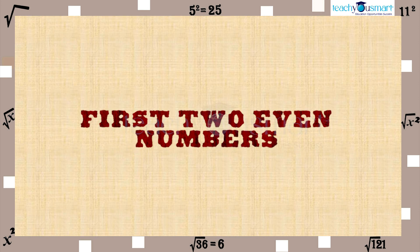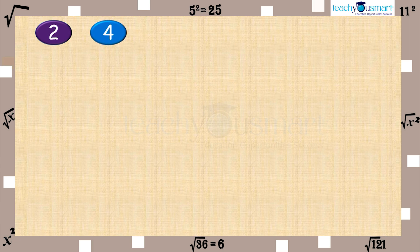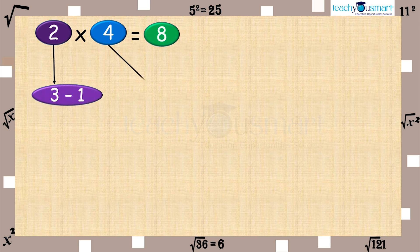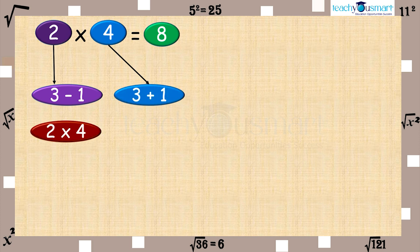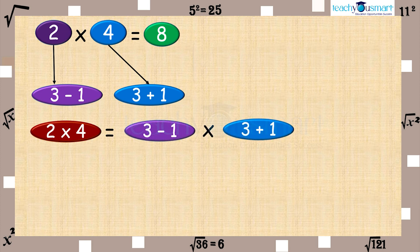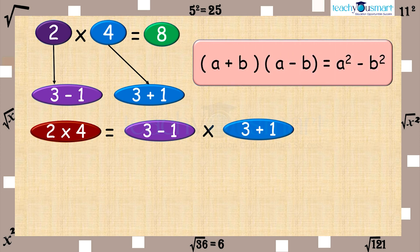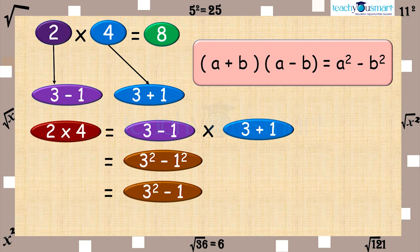Then consider the first two even numbers, that is, 2 and 4. We know 2 multiplied by 4 equals 8. We can rearrange 2 as (3 minus 1), and 4 as (3 plus 1). So, 2 multiplied by 4 equals (3 minus 1) multiplied by (3 plus 1), equals 3 square minus 1 square, equals 3 square minus 1, equals 8.